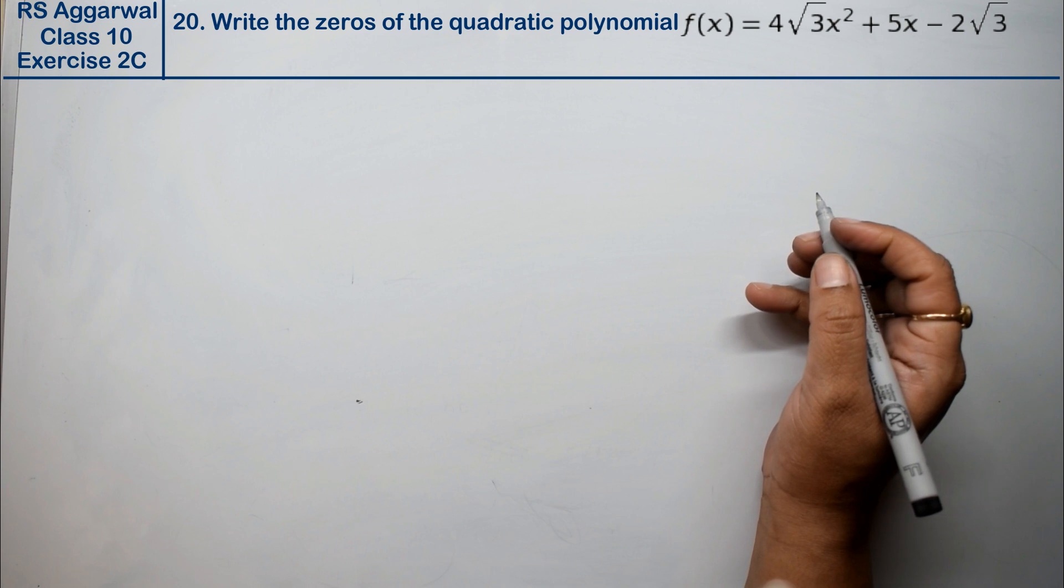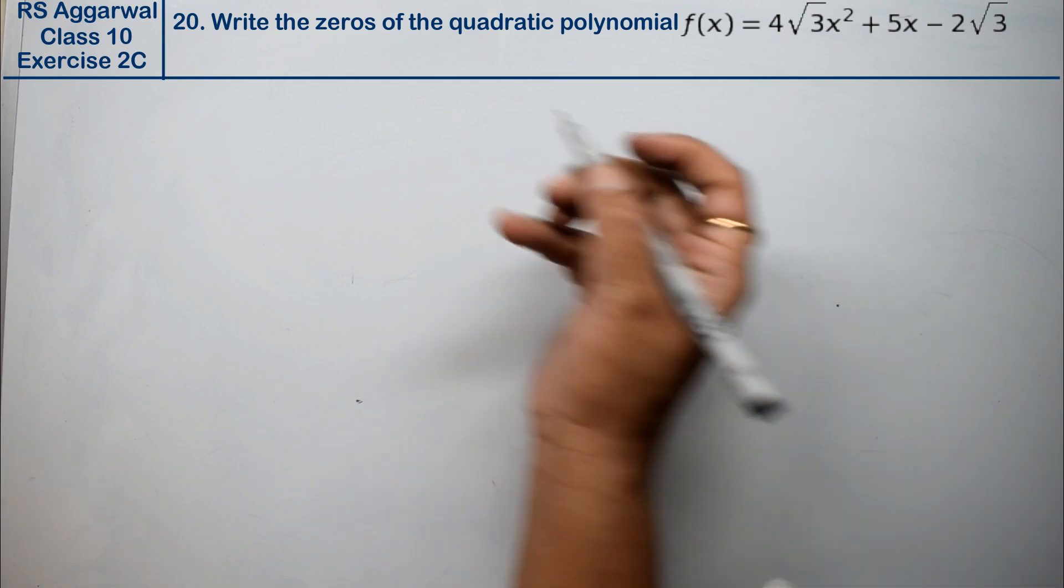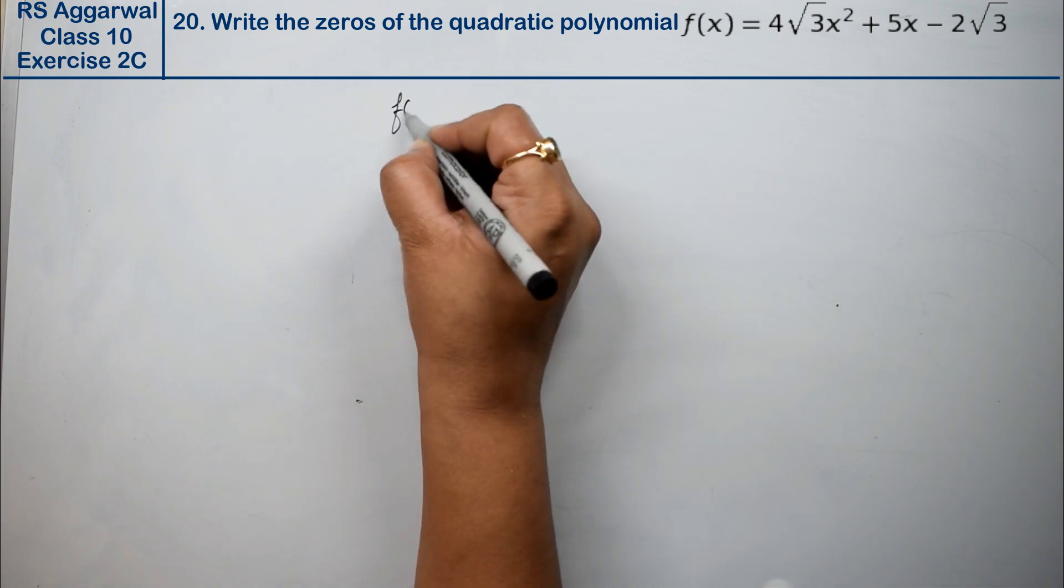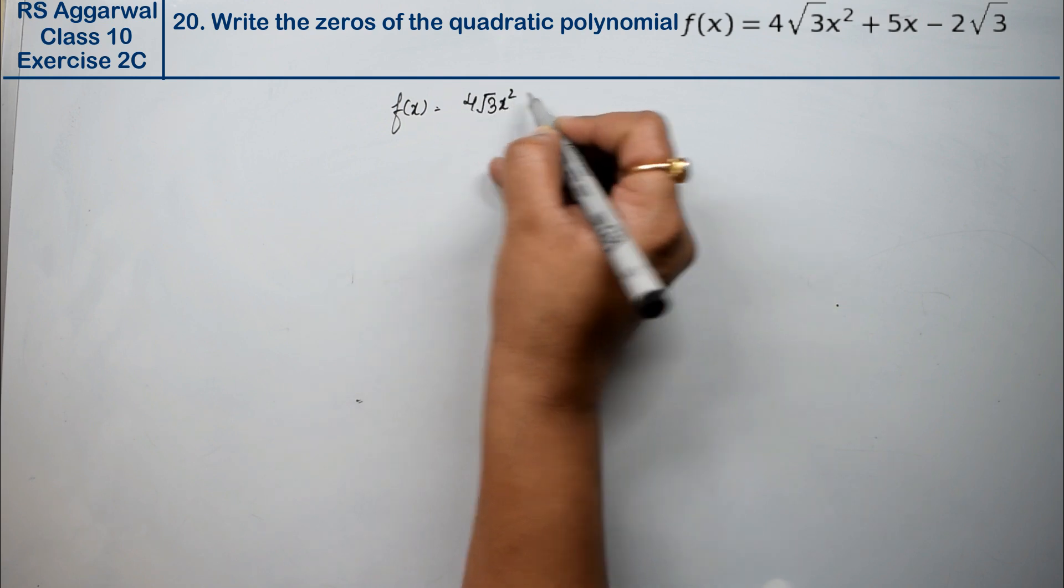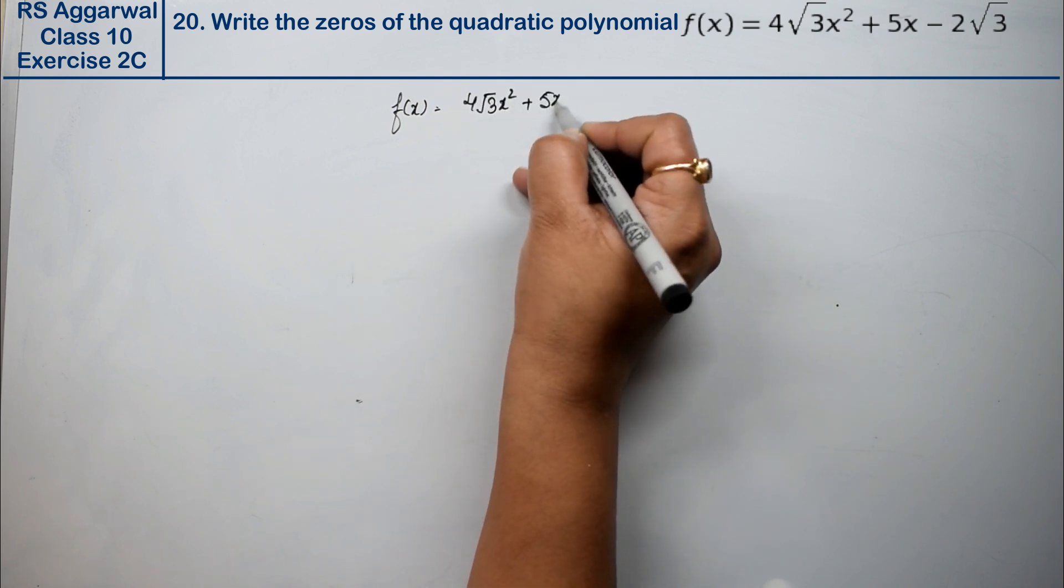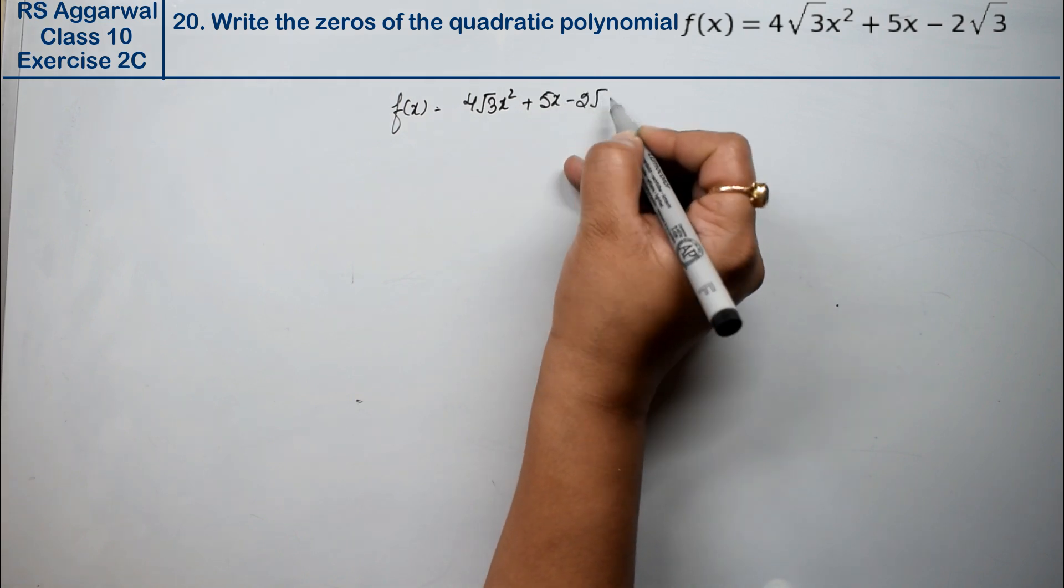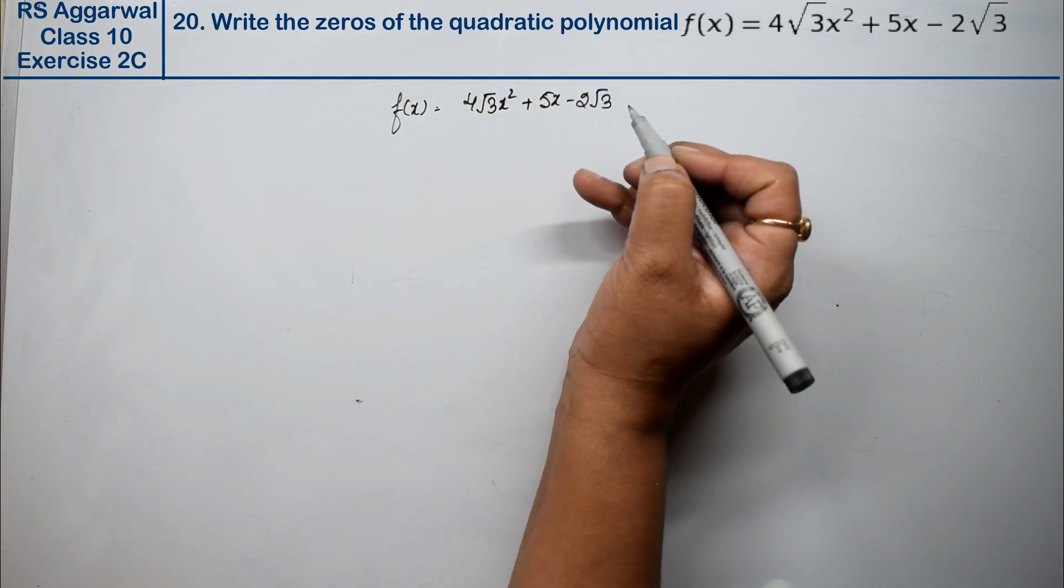Let's do question number 20 of exercise 2C, that is polynomial. Question number 20 is: write the zeros of the quadratic polynomial. The quadratic polynomial given is 4√3 x² + 5x - 2√3. We need to find the zeros of this polynomial.